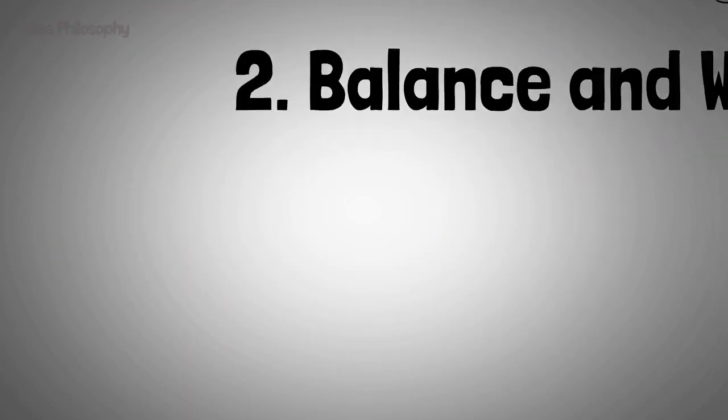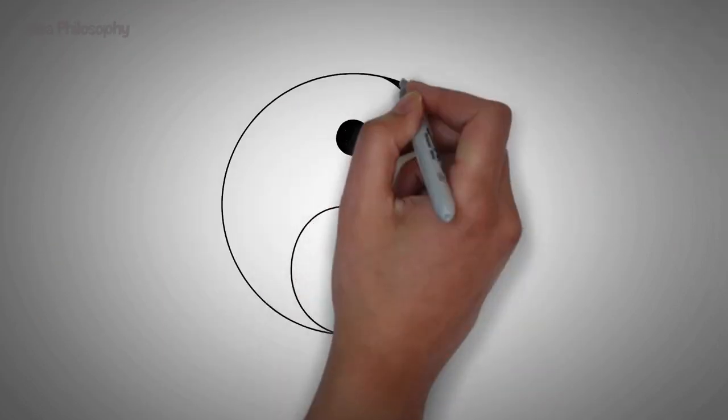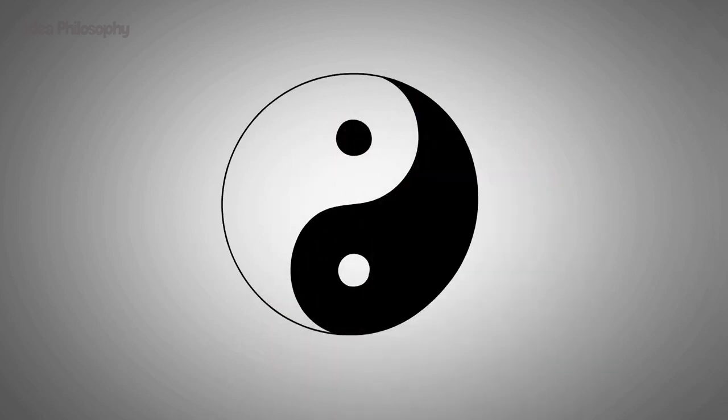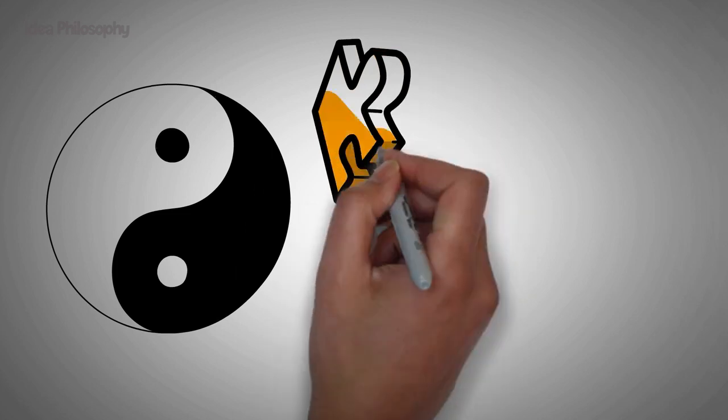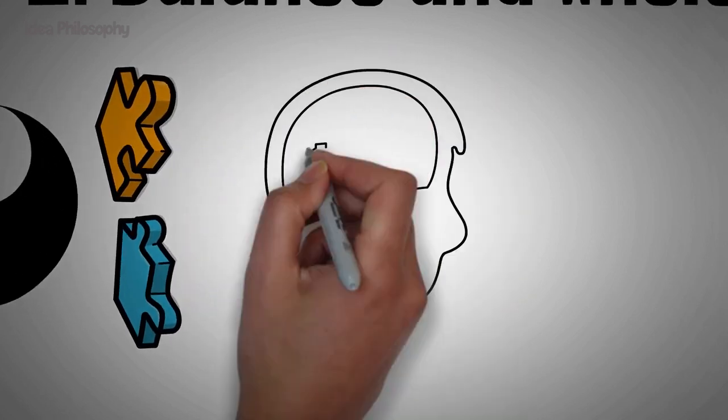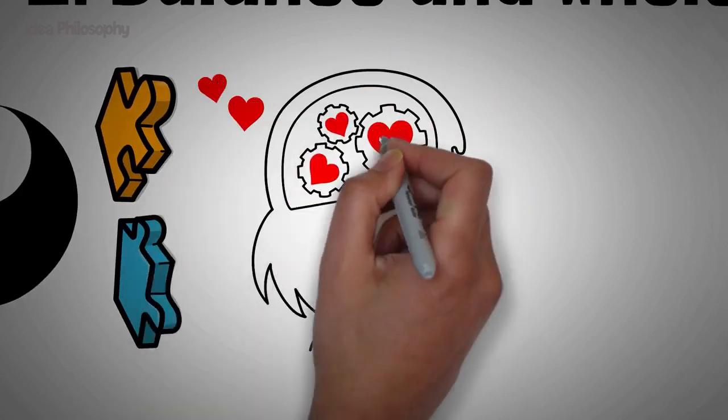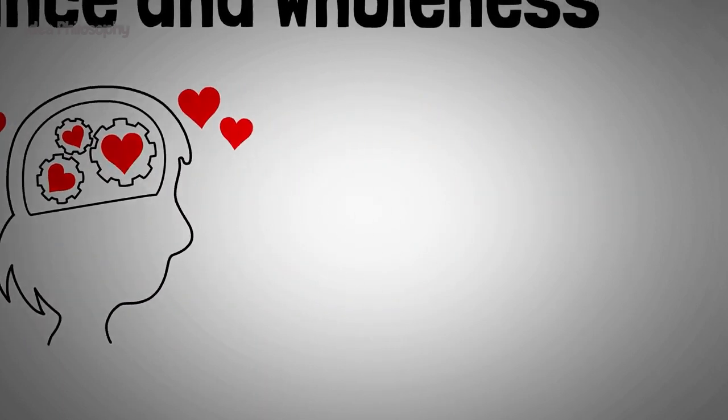Balance and wholeness. According to Jung, facing the shadow helps you regain inner balance and wholeness. Accept yourself. Emotion is the basis of emotional and mental integrity.